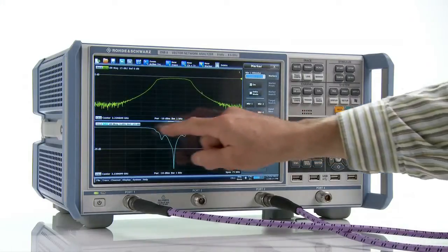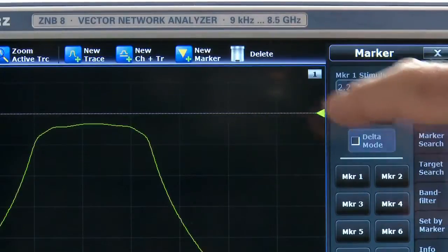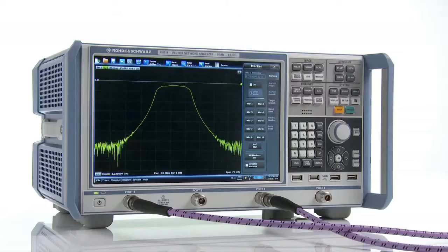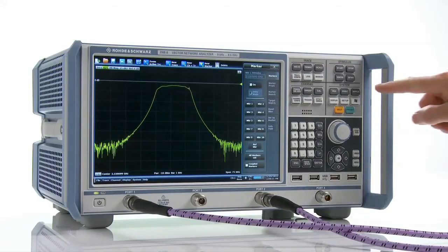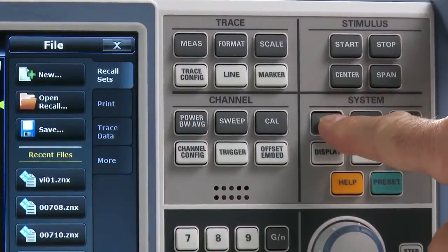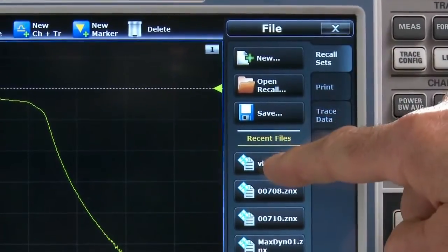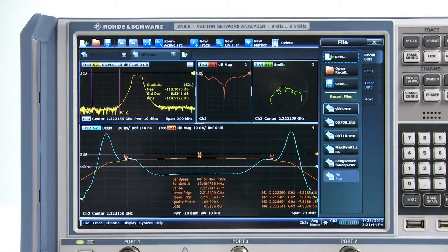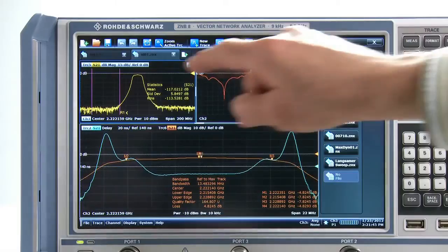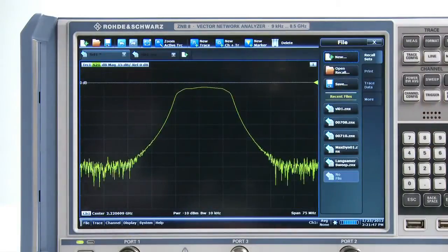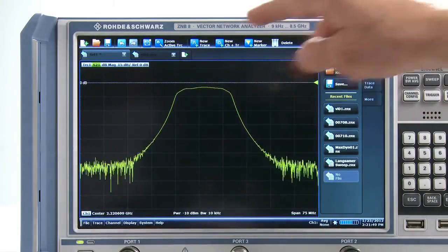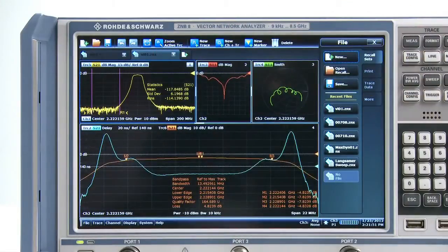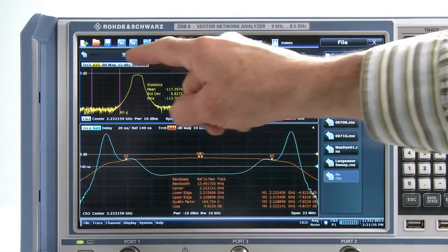When you no longer need a trace, just drag it into the trash can. Users who frequently switch between different types of DUTs will appreciate another feature of the ZNB. It lets you keep multiple complete instrument setups accessible at the same time. If you change the DUT, for example, when spot testing different filters, just tap on the setup you need.